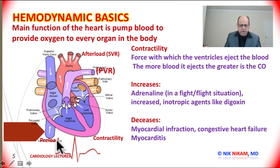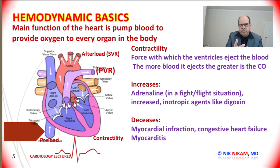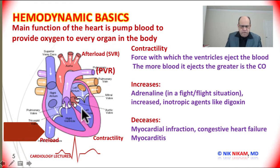Now we talked about preload and afterload — the systemic vascular resistance. Now let's talk about contractility of the ventricle, which is the main pumping function of the cardiac chambers, especially the right and left ventricles. Predominantly we are focused on left ventricular contractility. The force with which the ventricle pumps blood is known as contractility. It is based on preload, the amount of blood coming in before contraction, and on the resistance against which it has to pump. There is also a third parameter: the pumping efficiency of the heart muscle itself. If there is damage to the myocardium, as in myocardial infarction, there is reduced pump efficiency due to pump failure.